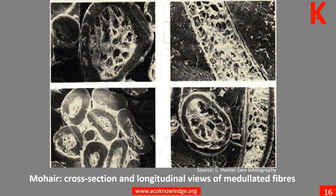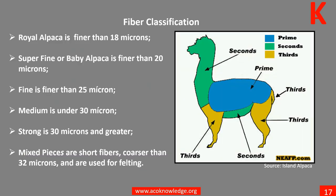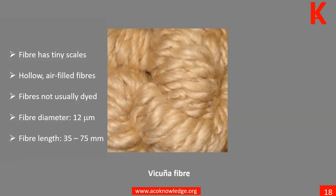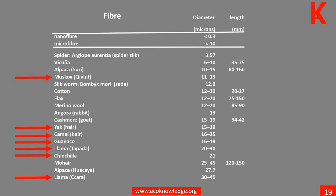Learn more in Unit 5. Royal alpaca is finer than 18 microns — learn more about what makes alpaca so versatile in Unit 6. The vicuña wool is extremely smooth, soft, and an excellent thermal insulator. Its properties come from a small diameter, tiny scales, and hollow air-filled fibers. Learn more in Unit 7.